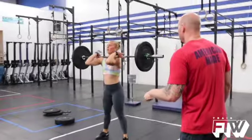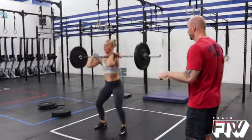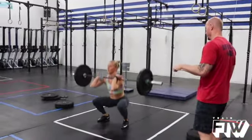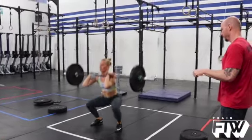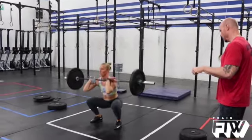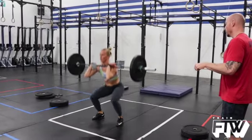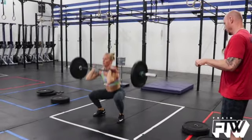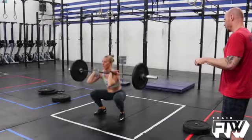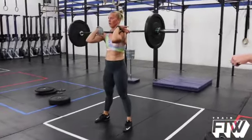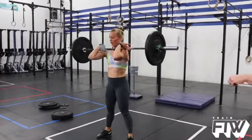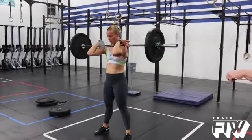So for the front squats and the thrusters, if it's a light weight for you, you can definitely go unbroken, but don't sprint it. Just keep a steady pace where you can keep your heart rate low so that you can attack the gymnastics movements after. The same thing for the thrusters, even though you're going into a minute of rest, still just keep a steady pace where you can keep your heart rate somewhat low.